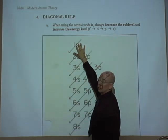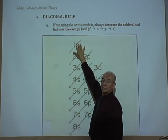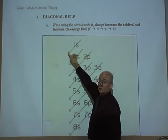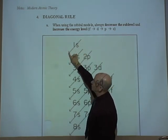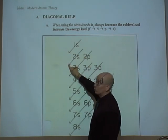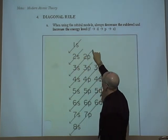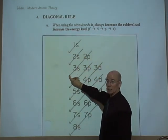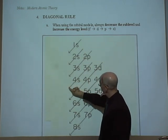We start with 1s. We always start with the lowest energy and notice we draw a diagonal line here and then once that's used up, we go back and we do 2s. Once that's used up, we go back and we do 2p, 3s, 3p, 4s,